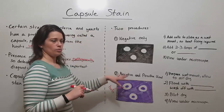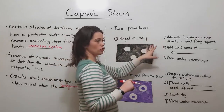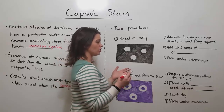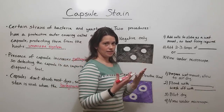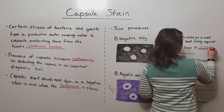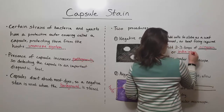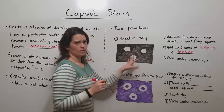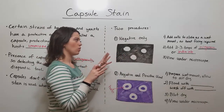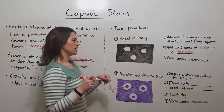Let's talk about the two procedures in more detail. If you're using a negative stain only, you'll add the cells to a slide as a wet mount — no need to heat fix it. Add two to three drops of a negative stain; common ones are nigrosin or india ink. Either one will provide a really dark background where the cells and their capsules will stand out as white against this dark background. You view the result under a microscope with an oil immersion lens.